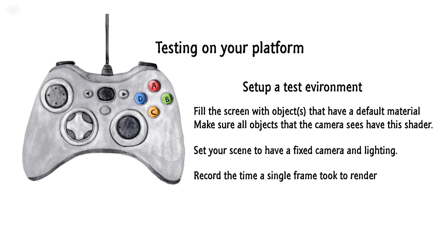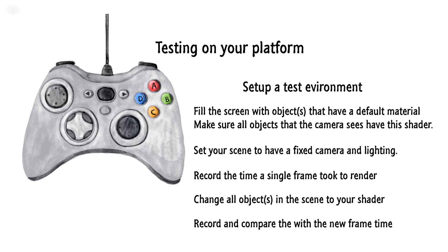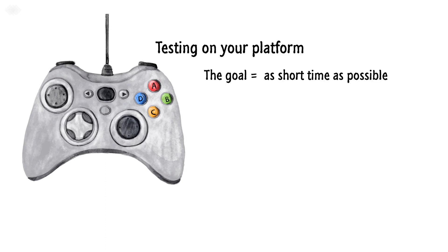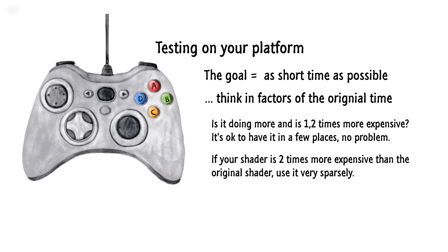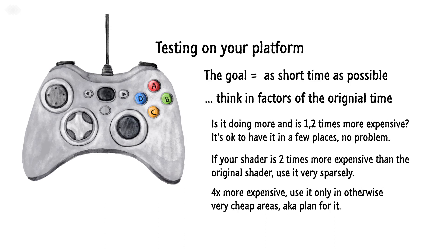Open your profiler and write down the time a single frame took to render. Now change all objects to your shader in the same scene, and in the profiler compare with your previous time. The goal is to keep the time as small as possible, but it's easier if you think in factors of the original time. If it's 1.2 times more expensive, it's okay to use in a few places. If it's 2 times more expensive, use it very sparsely. If it's 4 times more expensive, use it only in otherwise very cheap areas. If it's 8 times more expensive, go back to the drawing table.